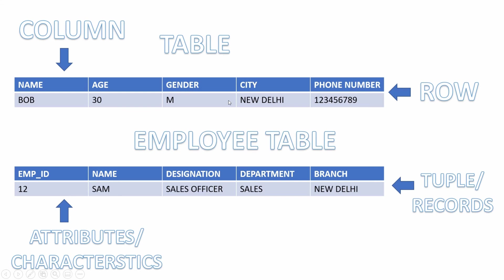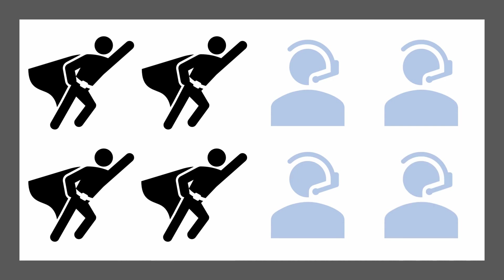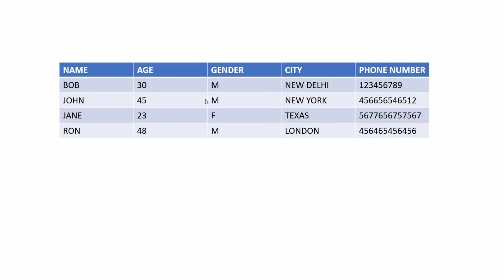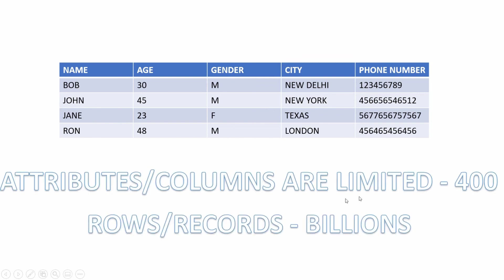Now, a good organization will have multiple customers and multiple employees. Will that increase the number of columns or attributes the table has? No — the attributes or columns in a table are usually fixed and limited. The addition of new customers will lead to the introduction of new rows. The maximum columns I've seen in a table were around 400, while I've seen billions of rows in tables.